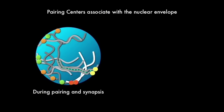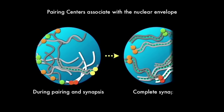We also found that these pairing centers are associated with the nuclear envelope during early meiosis. And so in this work, we've explored how it is that this connection to the nuclear envelope is established, and how it contributes to the processes of pairing and synapsis.